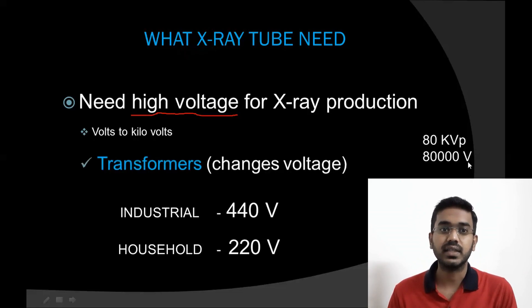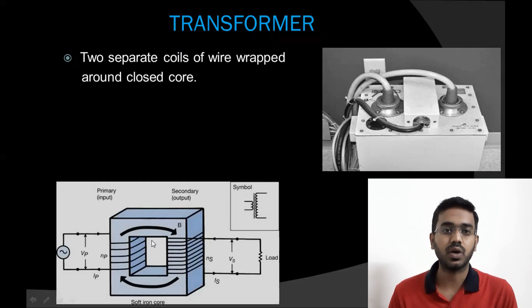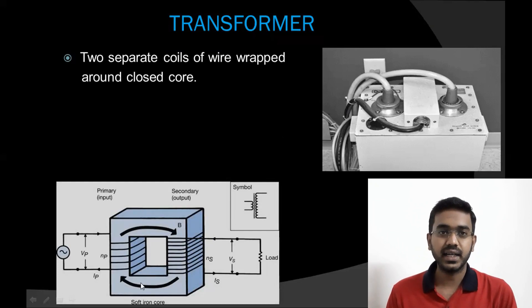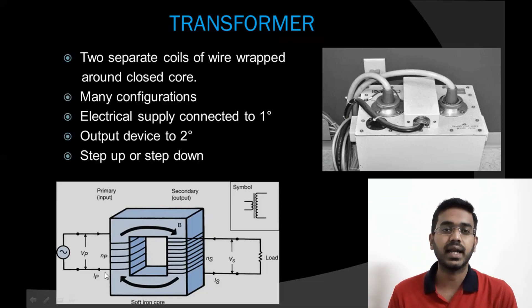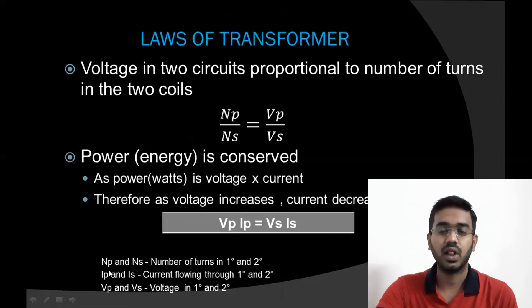A transformer is equipment that changes the voltage. Transformer looks like this — it has two separate coils of wire wrapped around a closed core. Electrical supply from the main source is connected to the primary side of the transformer, and the secondary side from the transformer is connected to the X-ray tube. Transformers have many configurations; based on this configuration, the transformer may be step-up or step-down. The voltage in the two circuits is proportional to the number of turns in the two coils.